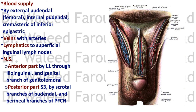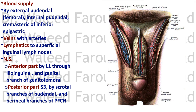The blood supply of the scrotum is by the external pudendal from the femoral artery, by the internal pudendal, and by the cremasteric branch of the inferior epigastric artery. The veins travel with the arteries. Lymphatics drain to the superficial inguinal lymph nodes. The nerve supply: the anterior part by L1 through the ilioinguinal nerve and genital branch of the genitofemoral nerve; the posterior part of the scrotum is by S3 via scrotal branches from the pudendal and perineal branches of the posterior femoral cutaneous nerve.